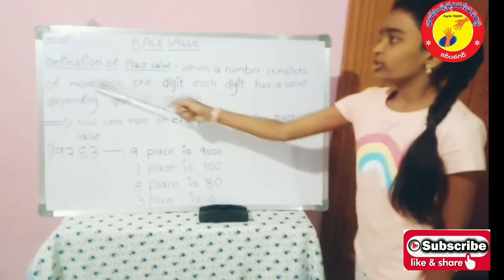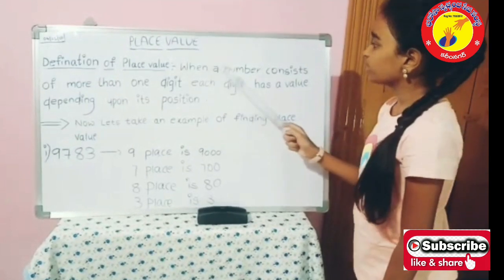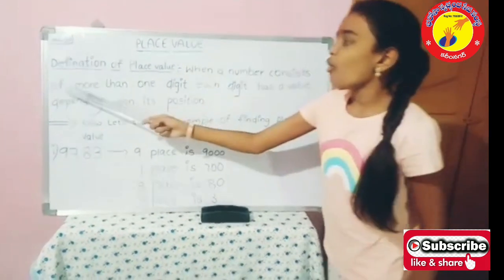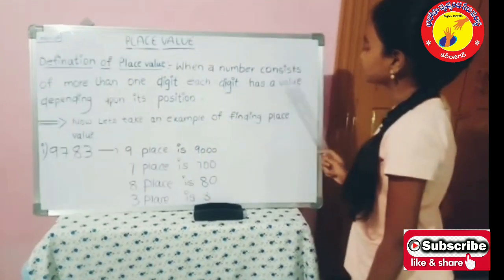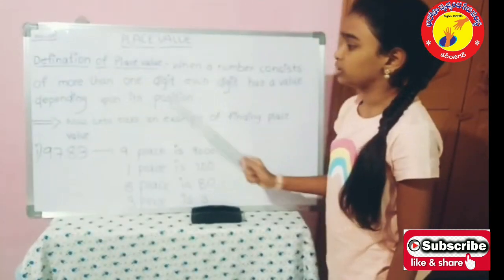Place value. Definition of place value: When a number consists of more than one digit, each digit has a value depending upon its position.